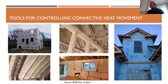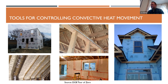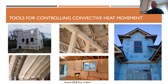Some of the tools you'll see people use for controlling air movement include building paper, caulks and foams, and other sealants. If you're using exterior rigid insulation, the tapes that go with the seams would be part of that air barrier. Insulations that are also an air barrier — like certain spray foams or continuous rigid foam — are all things we use to help control air movement across the building envelope.